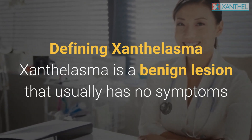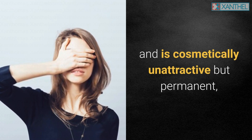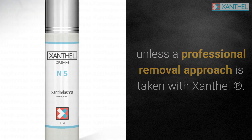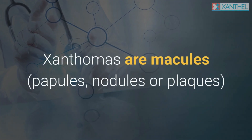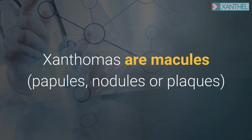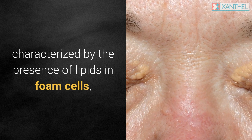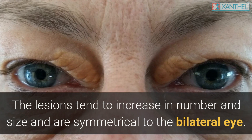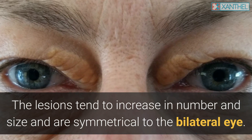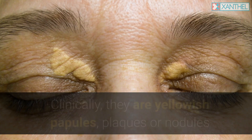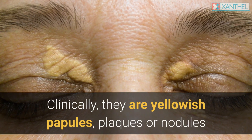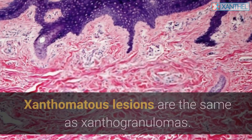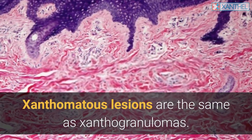Xanthalasma is a benign lesion that usually has no symptoms and is cosmetically unattractive but permanent unless a professional removal approach is taken. Xanthomas are macules, papules, nodules, or plaques characterized by the presence of lipids and foam cells, which are the histological characteristics of the lesions. The lesions tend to increase in number and size, are symmetrical and bilateral to the eye, and may be yellowish papules, plaques, or nodules with soft to semi-firm or hard consistency. Xanthomatous lesions are the same as xanthogranulomas.